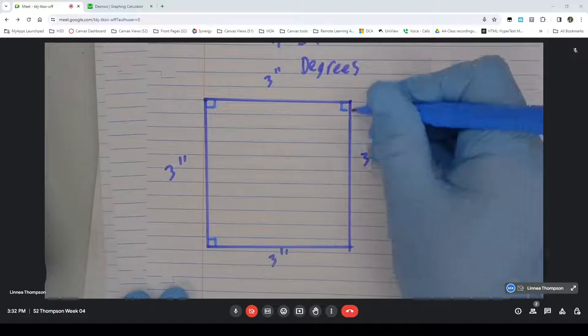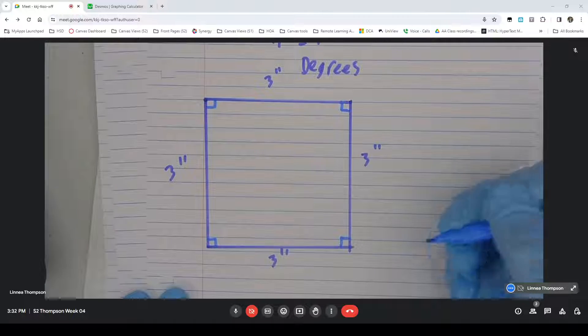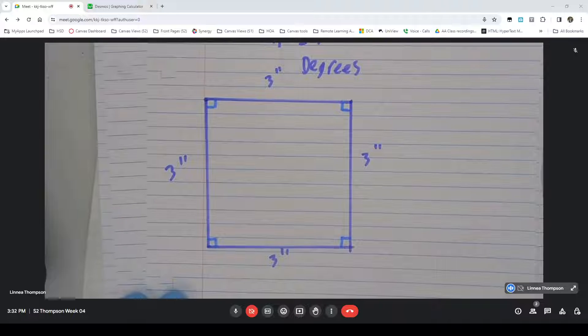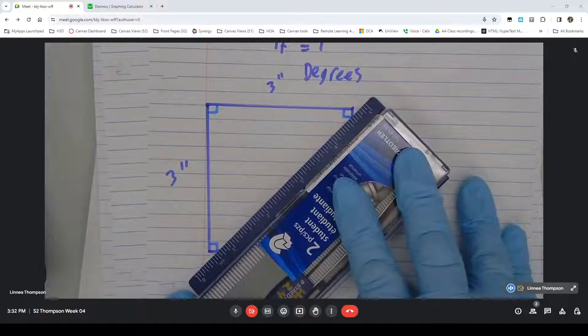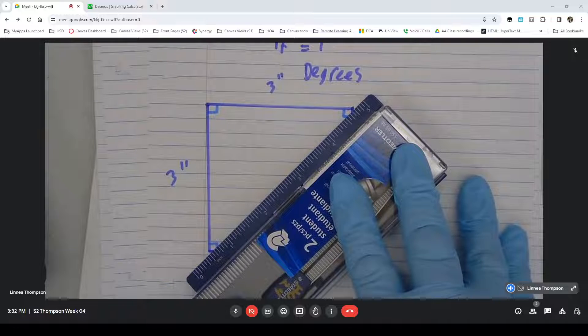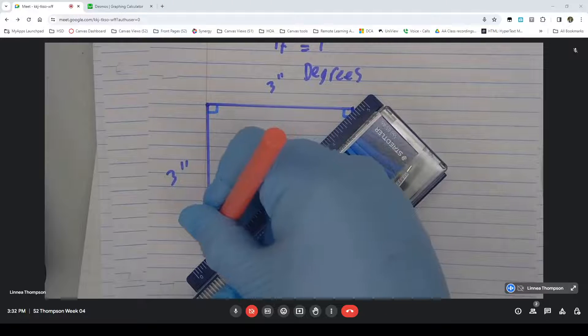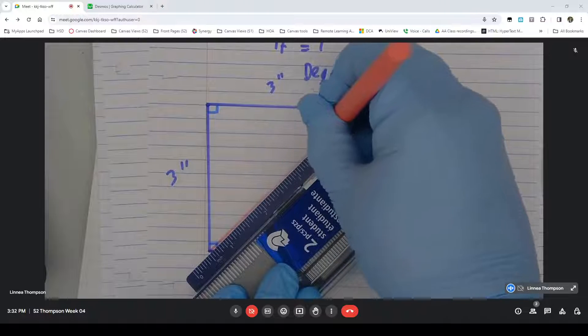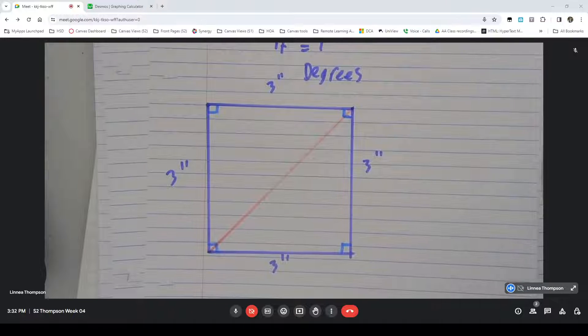But we are going to assert that these are all 90 degree angles. And I will mark them as so. Now if I cut this square in half, if I make a diagonal here, we can use some of our known properties of squares to see what will happen.